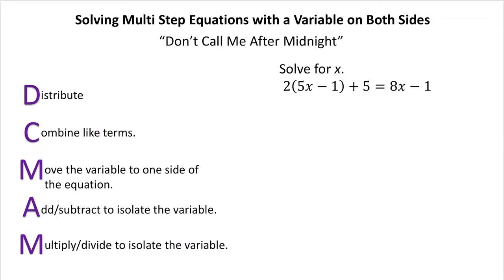Let's try using these steps to solve this example. We have 2 times (5x minus 1), so I'm going to start off by distributing. That gives me 10x minus 2, plus 5 equals 8x minus 1.